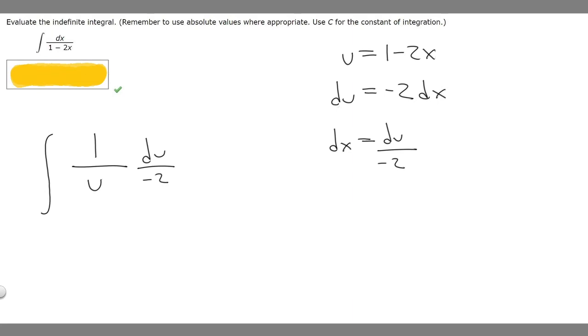What we can do here is just move the minus 2 out front. So we can rewrite this as minus 1 half, because minus 2 is the same thing as minus 1 half when it's on the bottom. Then we're multiplying it by 1 over u du. I left these separate on purpose and I'll show you why.